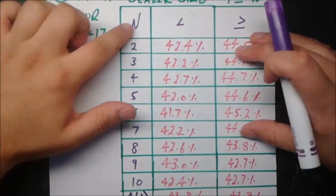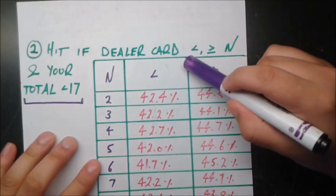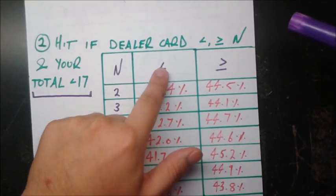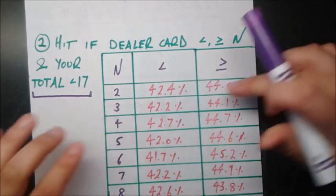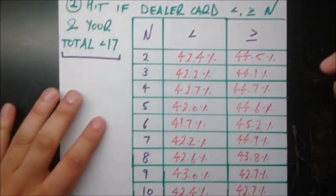So now this table is telling us all the different values of n, which is the less than or greater than or equal to limit. And then this is a table for less than and this is greater than or equal to. And all these numbers tell us the probability of winning in each case.